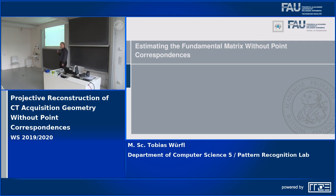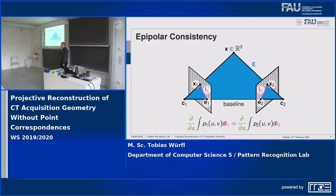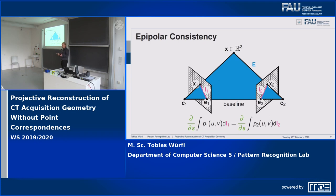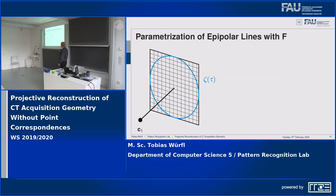This leads me to the topic of this talk: I want to estimate fundamental matrices without point correspondences. I refer back to the epipolar geometry and highlight the epipolar plane. Since we are working in X-ray imaging, what we want to reconstruct is the 3D distribution of the linear attenuation coefficient. If we think about this epipolar plane and all the attenuation contained in it, an integral over the whole plane accumulating all attenuation should be the same no matter from which detector we measure — meaning an integral over the epipolar lines should equal the integral over the corresponding epipolar line. Using a consistency condition, I want to parametrize my epipolar lines.